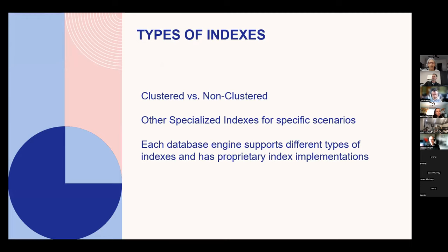There are many different types of indexes. I want to briefly talk about clustered index versus non-clustered index. A clustered index actually orders the data in your table — typically it's the primary key, but it doesn't have to be. If you have a clustered index, you'll get very quick retrievals for large ranges of data. All other indexes you add are non-clustered, and they are useful for getting a smaller set of data, particularly when there are many different values in that column.